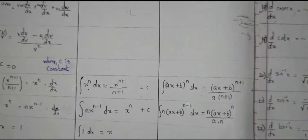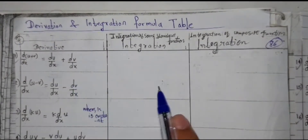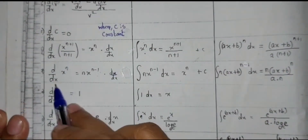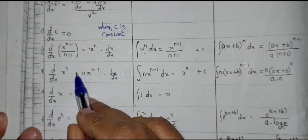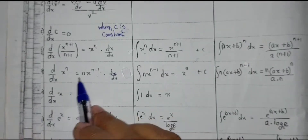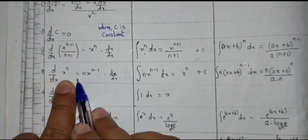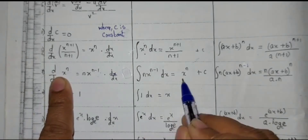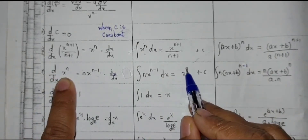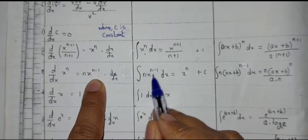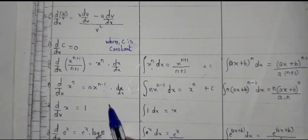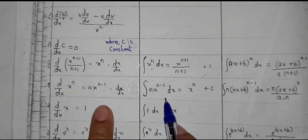Now, how to remember? The first column is for derivative, the second is for integration of some standard function, and the third is integration of composite function. In the derivative, LHS is the question and RHS is the answer. In the case of integration, the question of the derivative is the answer in integration, and the answer of the derivative becomes the question in integration. So if you remember the first column — the derivative formulas — you can easily find out the integration part.